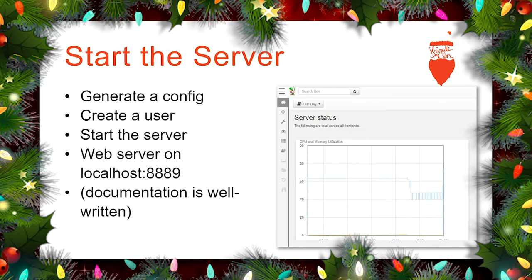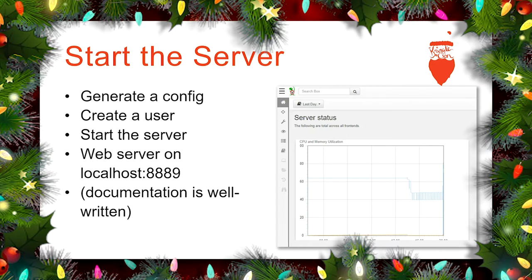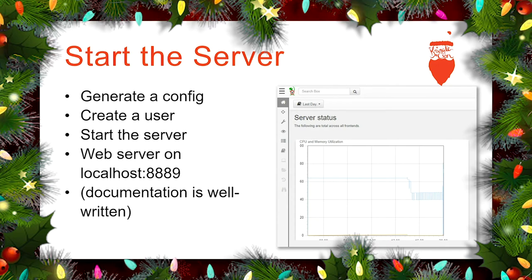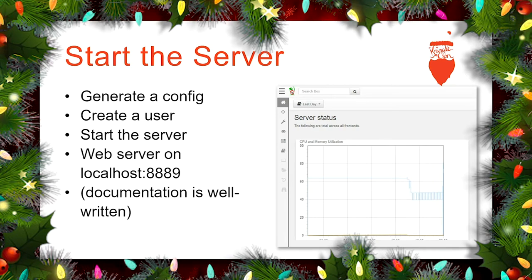So first we're going to start our Velociraptor server. You need to download an executable and install it, generate a config, create an admin user, then start the server. It's going to listen on localhost 8889, so you can do everything we're going to see here from a browser. I've got to give a shout out — the documentation is great, it's step by step.